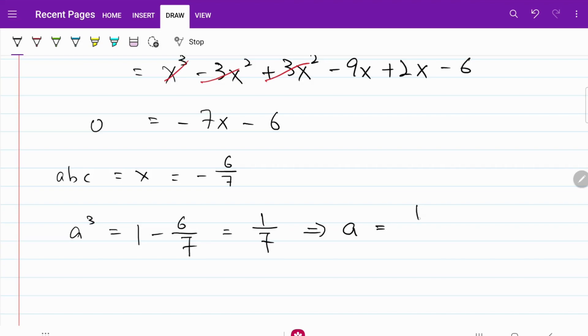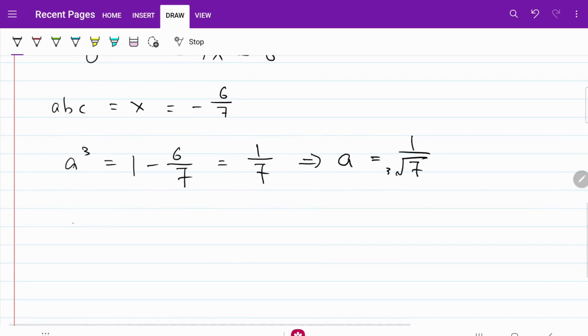b cube is equal to two minus six over seven, equal to eight over seven. Therefore, b is equal to two over seven cube root.